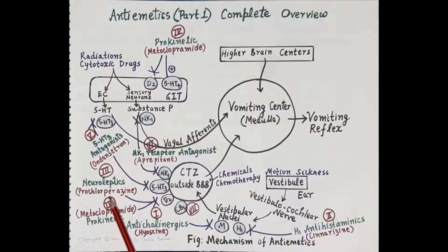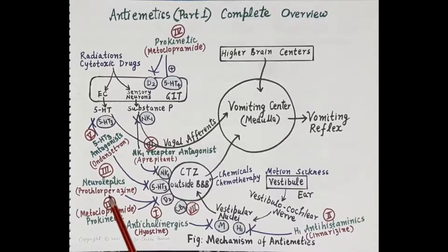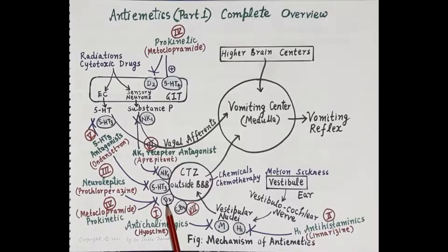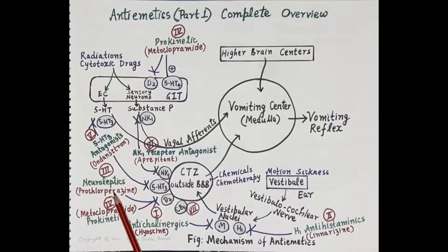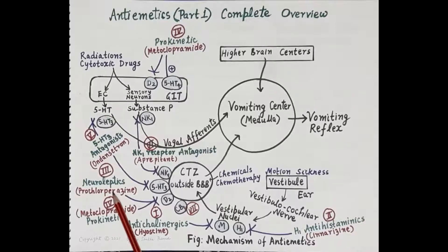The third category of agents are the neuroleptics, that is D2 antagonists — for example, prochlorperazine. These drugs block D2 receptors located on the chemoreceptor trigger zone. Neuroleptics are broad-spectrum antiemetic drugs indicated in drug-induced nausea and vomiting and post-operative nausea and vomiting, but are not the preferred choice due to extrapyramidal side effects and numerous drug interactions.